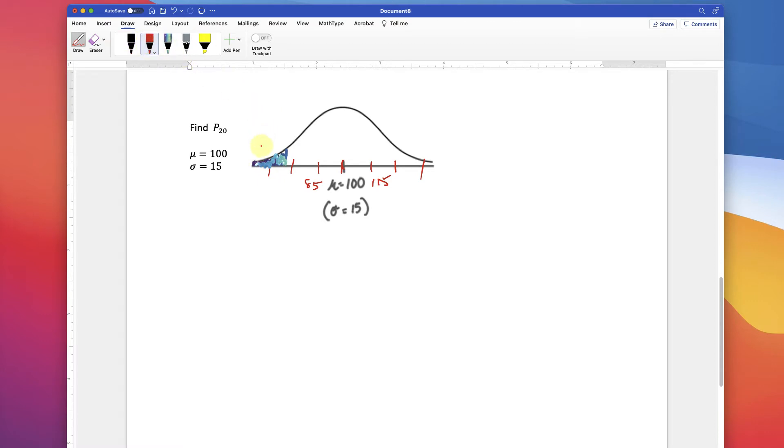So we're looking at .20 means the shaded area. If you use a table, which you can do, it's a little more challenging because you're actually finding a z-score then, and this isn't standardized.